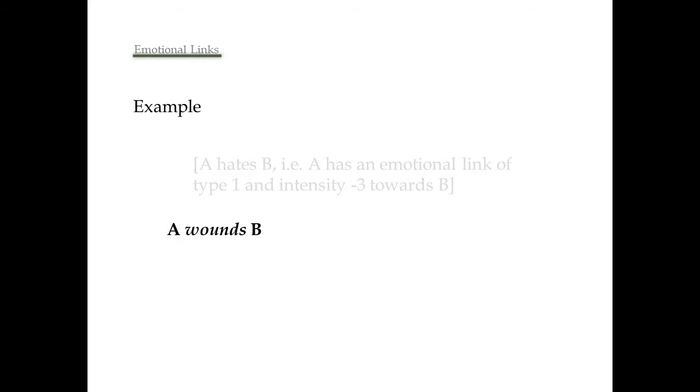Now, let's see an example of an emotional link working as a precondition. If we have the action A wants B, the precondition will be that A hates B. That is, character A has an emotional link of type 1 and intensity minus 3 towards character B.